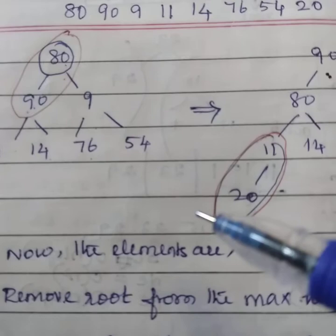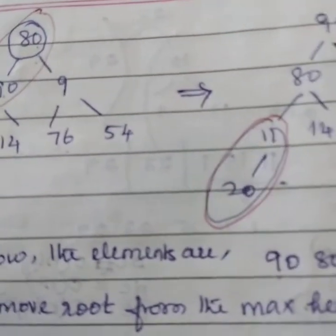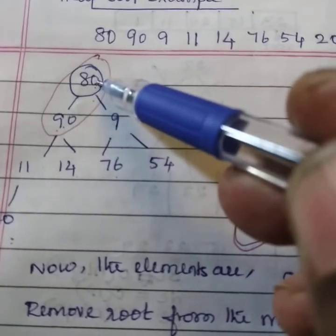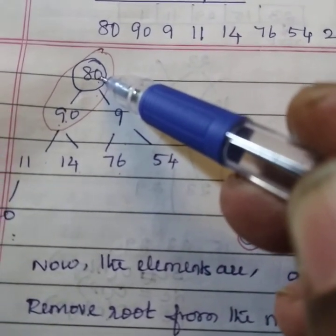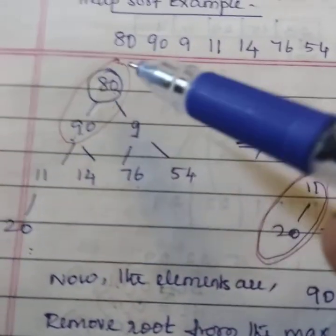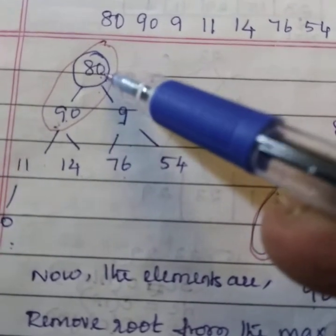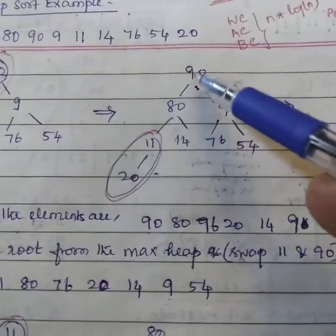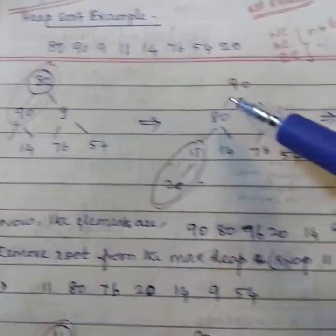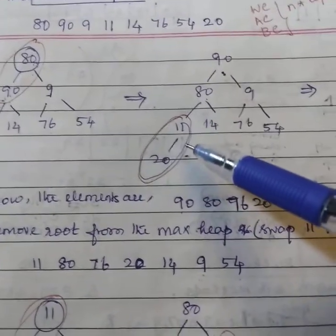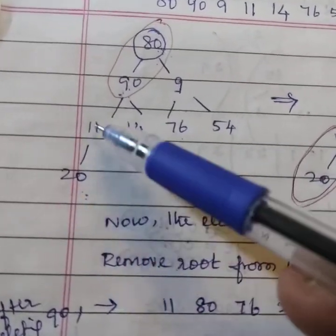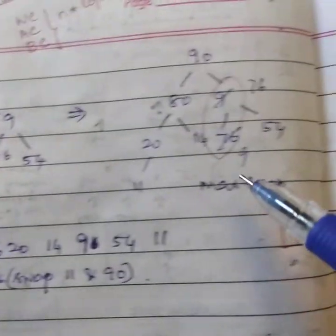Here, we need to consider one rule. That is, all parent node value must be greater than the children. So here, the parent node is lesser. So what we need to do? We have to interchange these two values. See here, 80 and 90 gets interchanged. Similarly, in the least area, the lower level, 11 and 20 has to be interchanged.